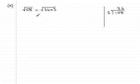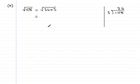Now I can use a particular rule: when you get a product of two or more numbers under a square root, it's exactly the same as doing the square root of each particular number multiplied together. So this is exactly the same as doing the square root of 36 multiplied by the square root of 3.